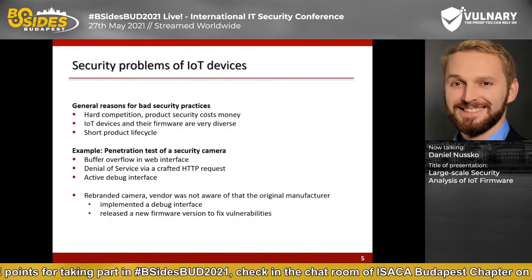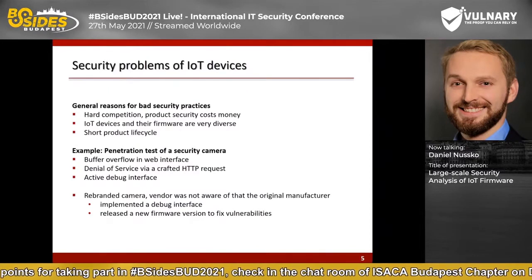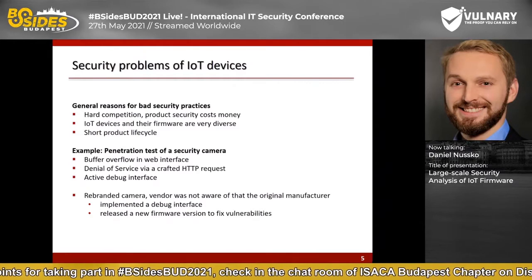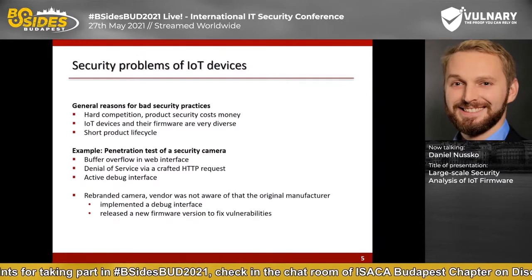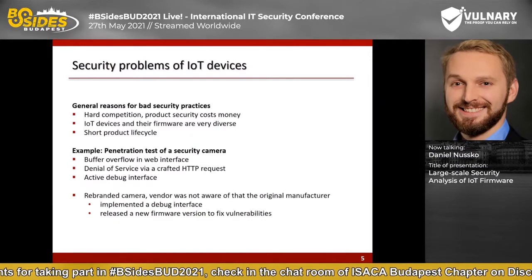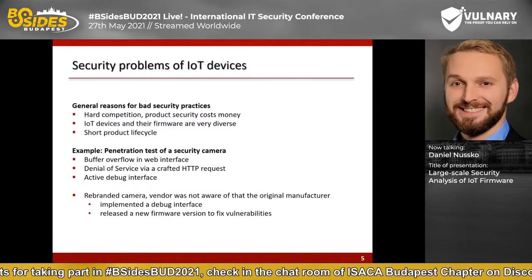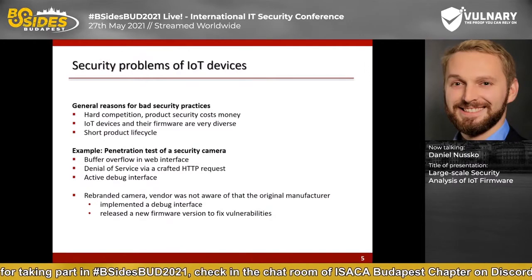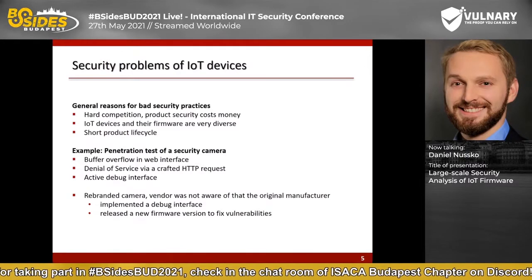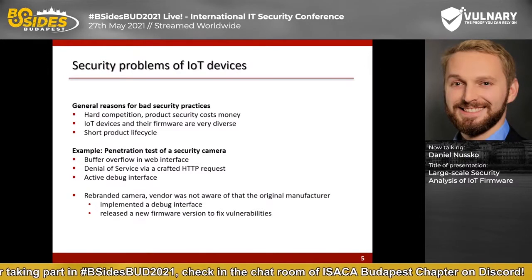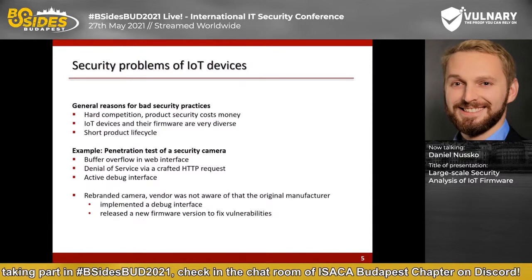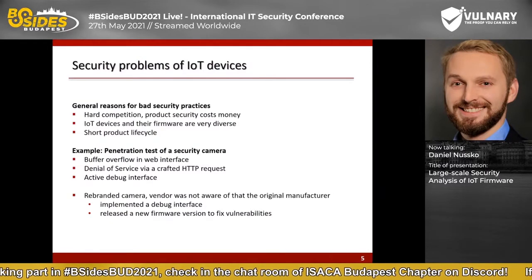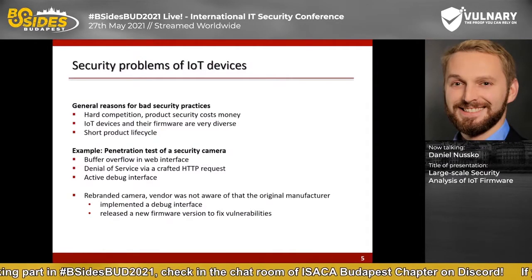The security of IoT devices is known to be poor. But what are the reasons for such bad product security? These devices are often produced as cheaply as possible. There is hard competition between vendors, and product security costs money — it's not the vendor's first priority.